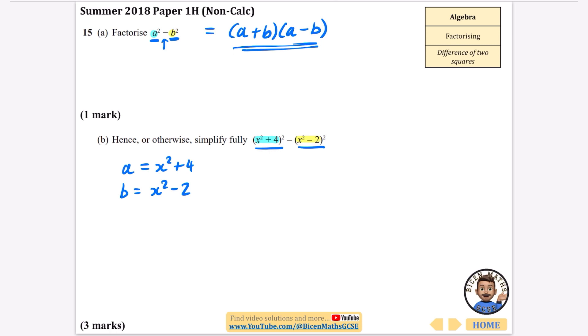So if I use this pattern here, because it does say hence which means using what you've got earlier, I'm going to do a plus b for the first bracket and then the second bracket I'm going to do a minus b. So if I do a plus b, that's x squared plus four plus x squared minus two, which is two x squared plus two. If I do a minus b, that is x squared plus four minus x squared minus two, and that needs to be in brackets. So that's x squared plus four minus x squared plus two.